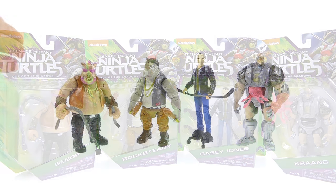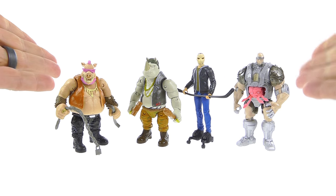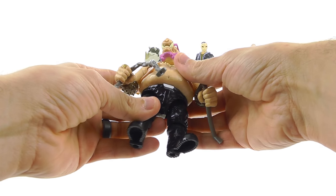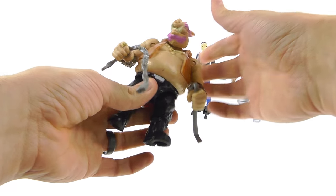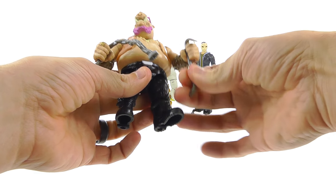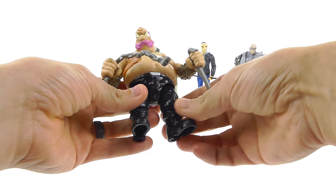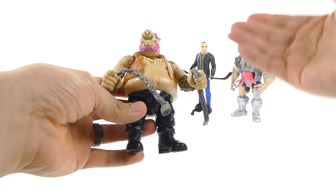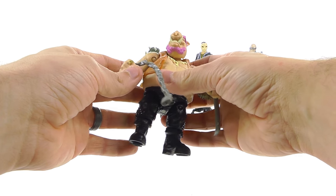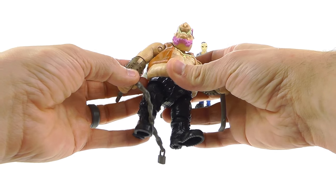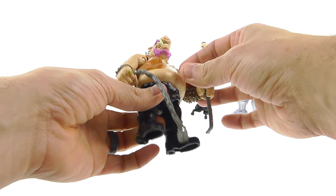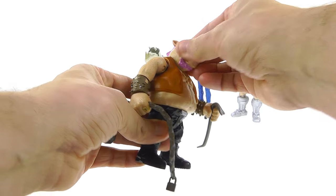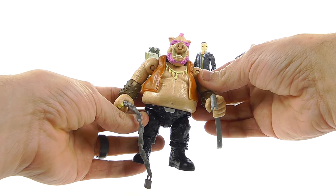Here we have Bebop, Rocksteady, Casey Jones, and Krang opened up and out of their packaging. Starting off first with Bebop, I think that the inclusion of Bebop and Rocksteady is probably the most exciting aspect of the new Ninja Turtle movie. It's the first time we're getting them in a live action film and they're definite fan favorites. In terms of the overall look, both the movie and the toys here really did nail it very nicely.